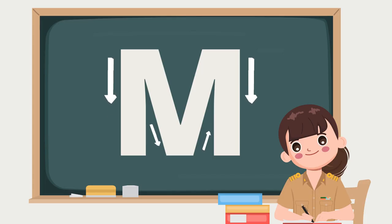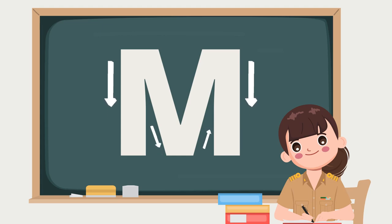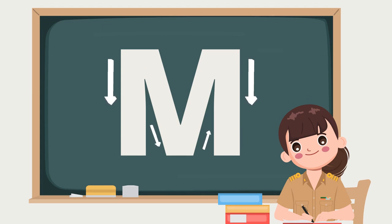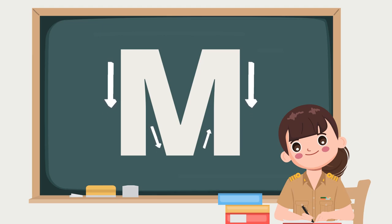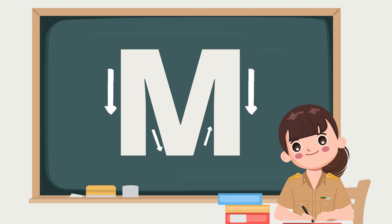Let's practice writing big letter M. Down, slant down, slant up and down. Down, slant down, slant up and down. Good job! Nice!